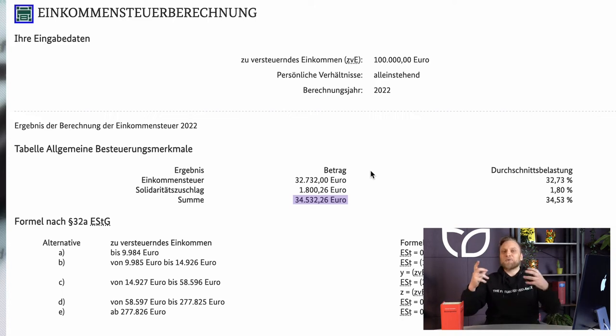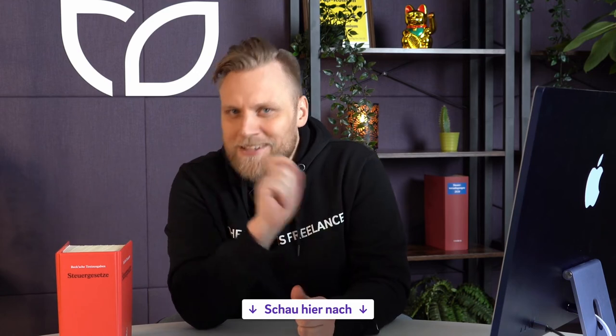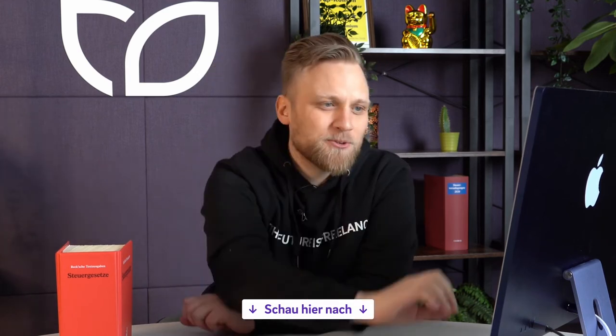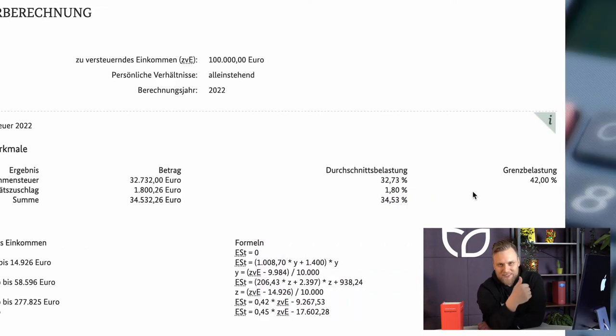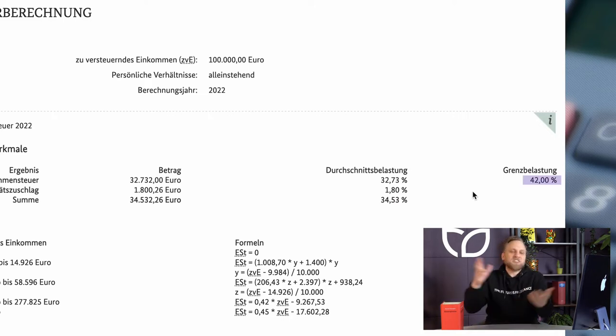Important at this point: there are also differences between your average tax rate and your marginal tax rate — there's an in-depth video on this in the description. The tool shows me that I have an average tax rate of 34.53% and a marginal rate — that is, a personal marginal tax rate or top tax rate — of 42%.